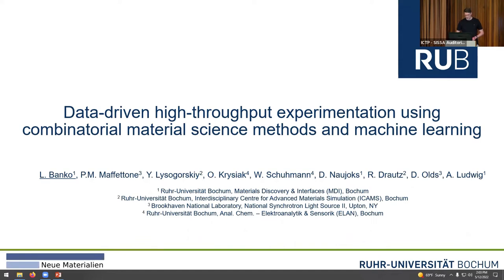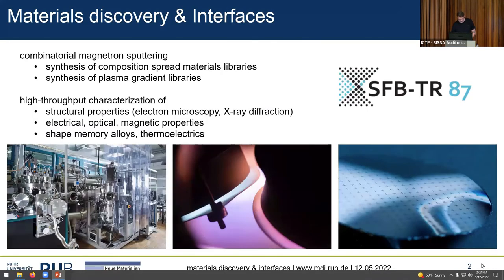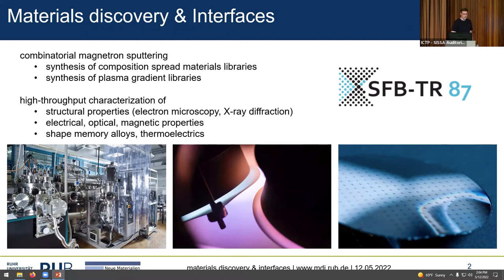I'd like to start with a brief introduction to what we are doing at the Chair for Materials Discovery and Interfaces — the chair of Professor Alfred Ludwig. I'm a postdoc in this group. We do combinatorial materials science: we use combinatorial magnetron sputtering to create composition gradients or process gradients, and then perform high-throughput characterization of structural, electrical, optical, and magnetic properties, as well as shape memory alloys and thermoelectrics.